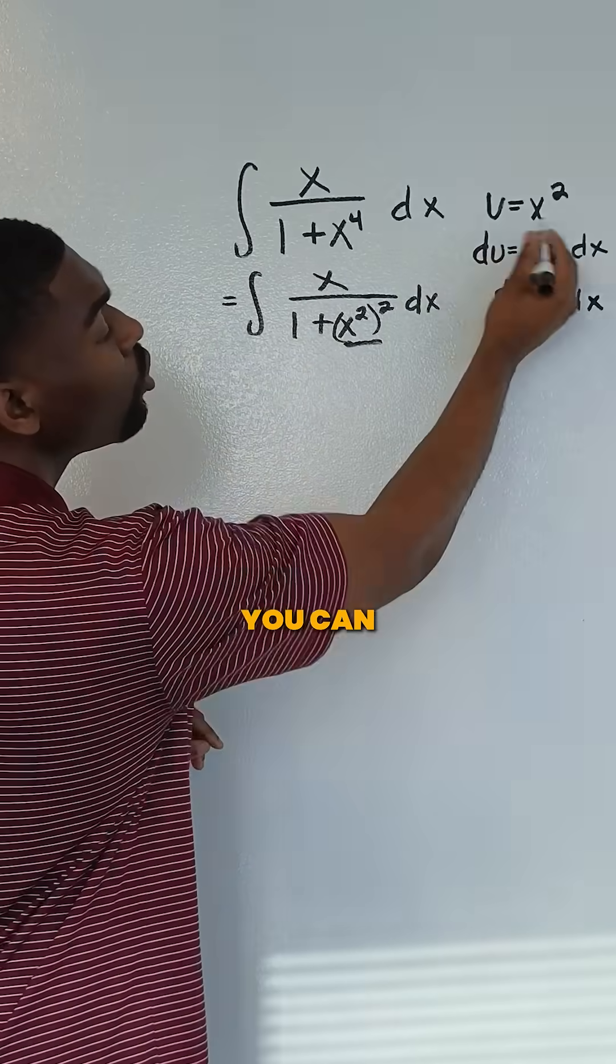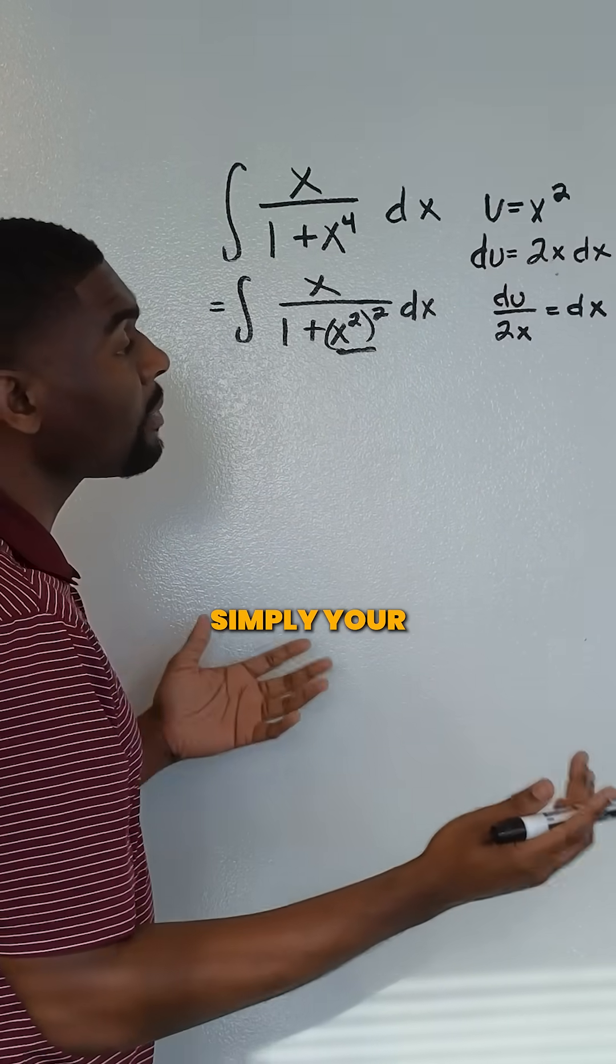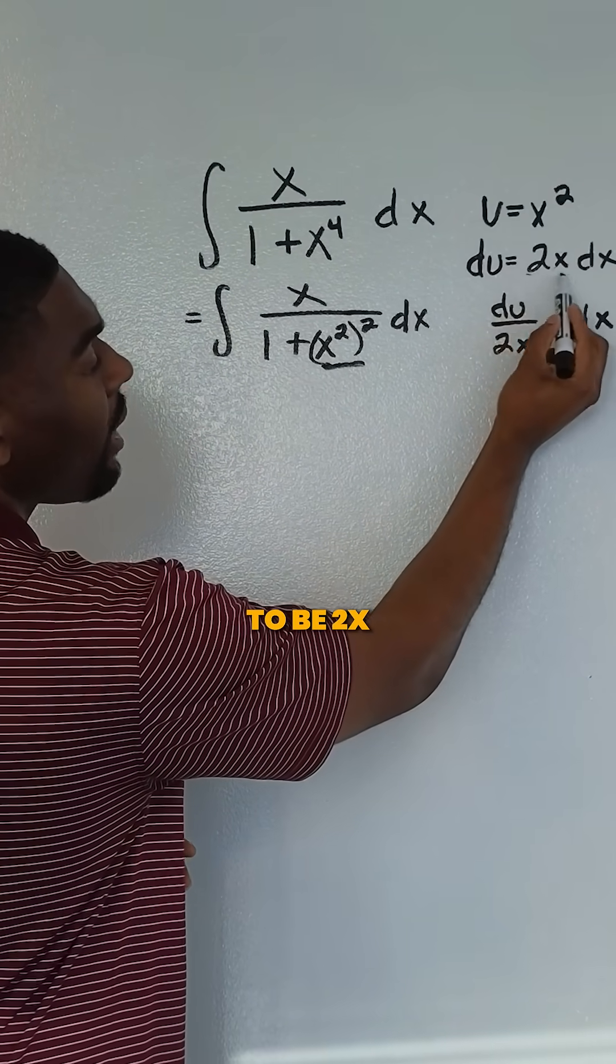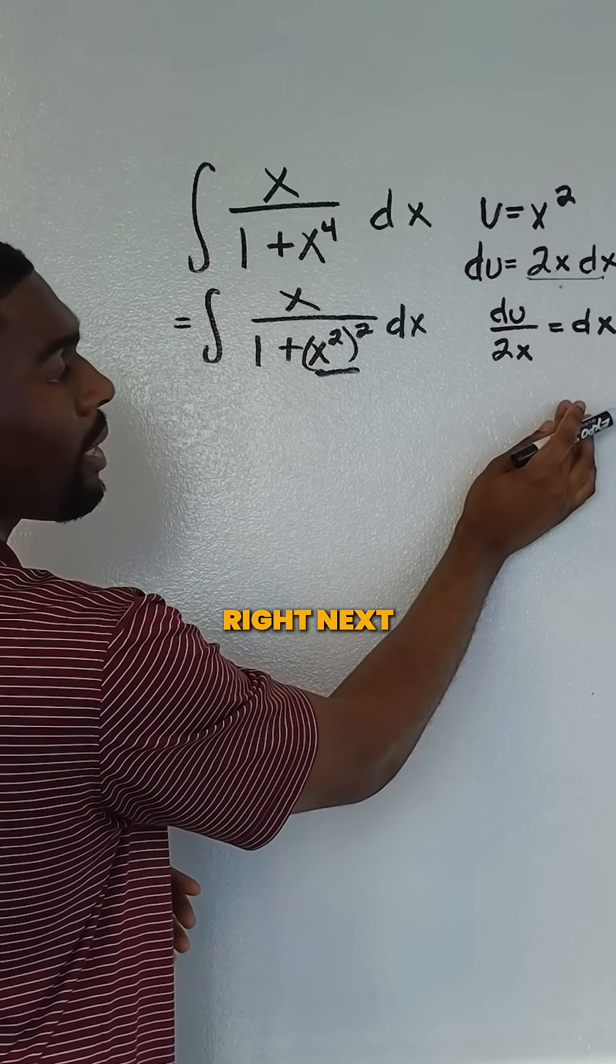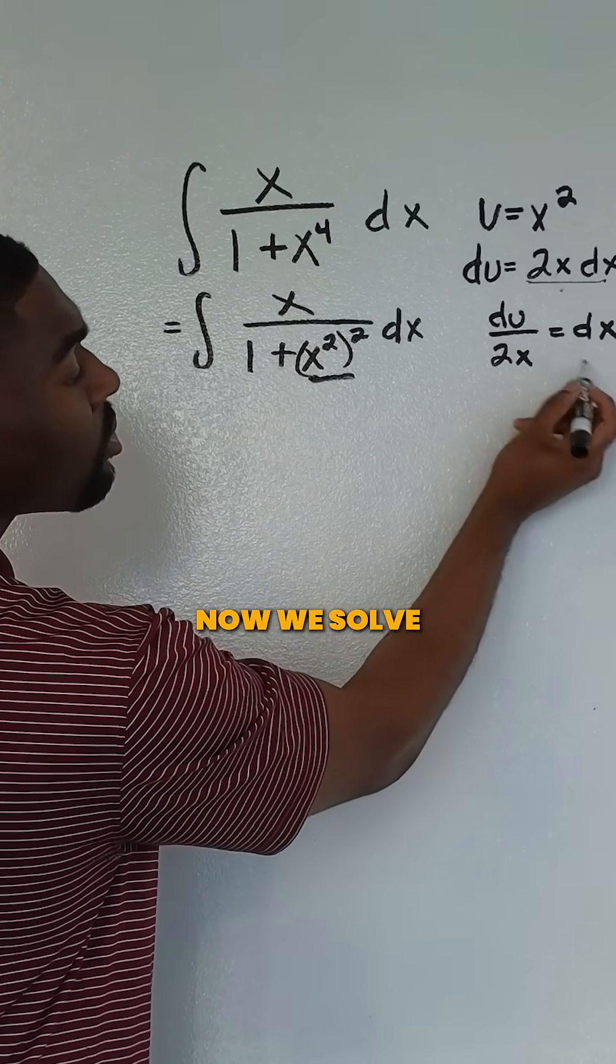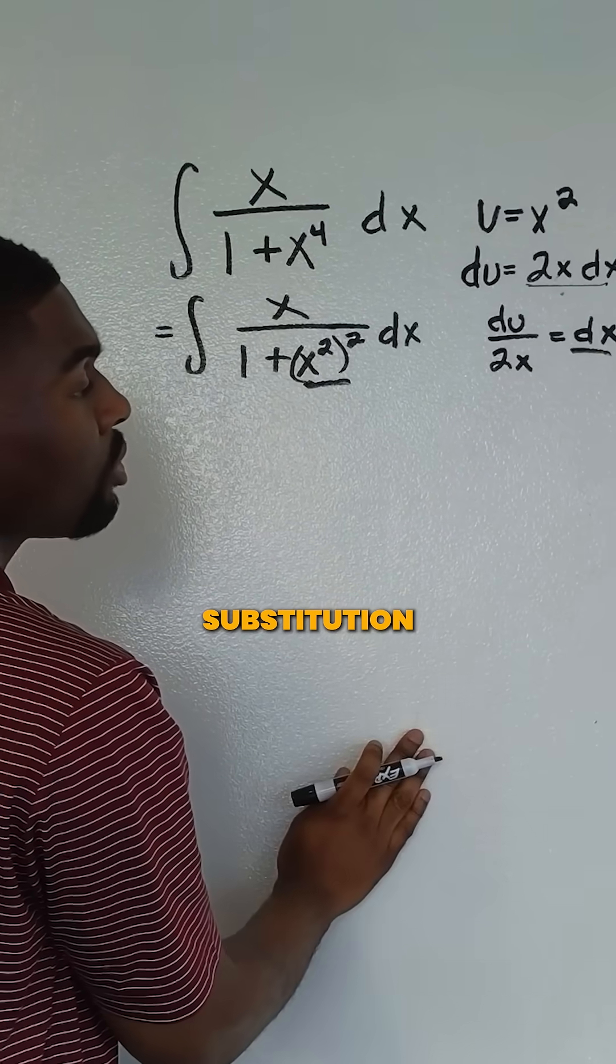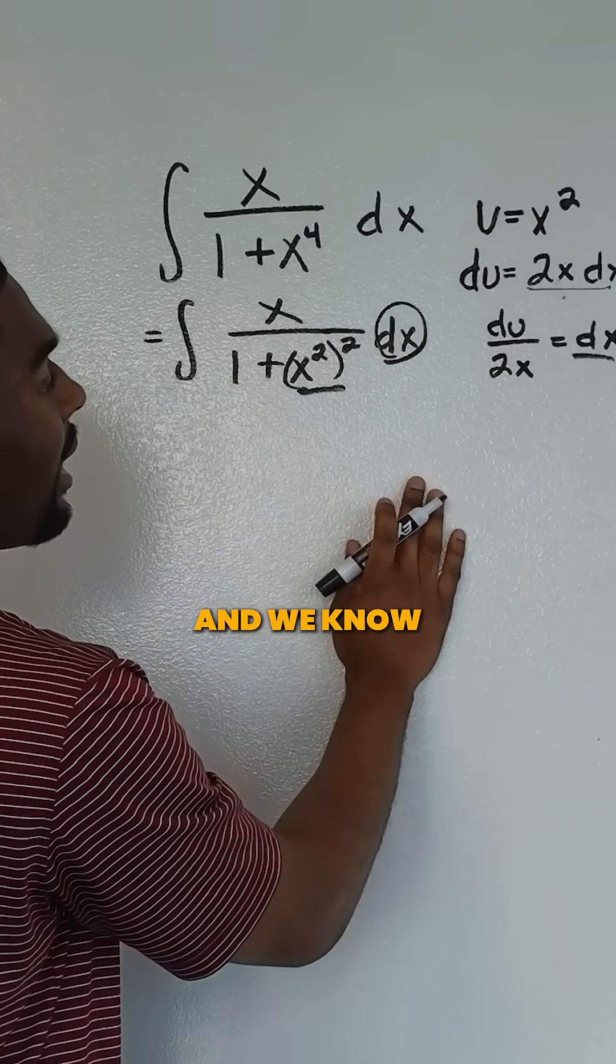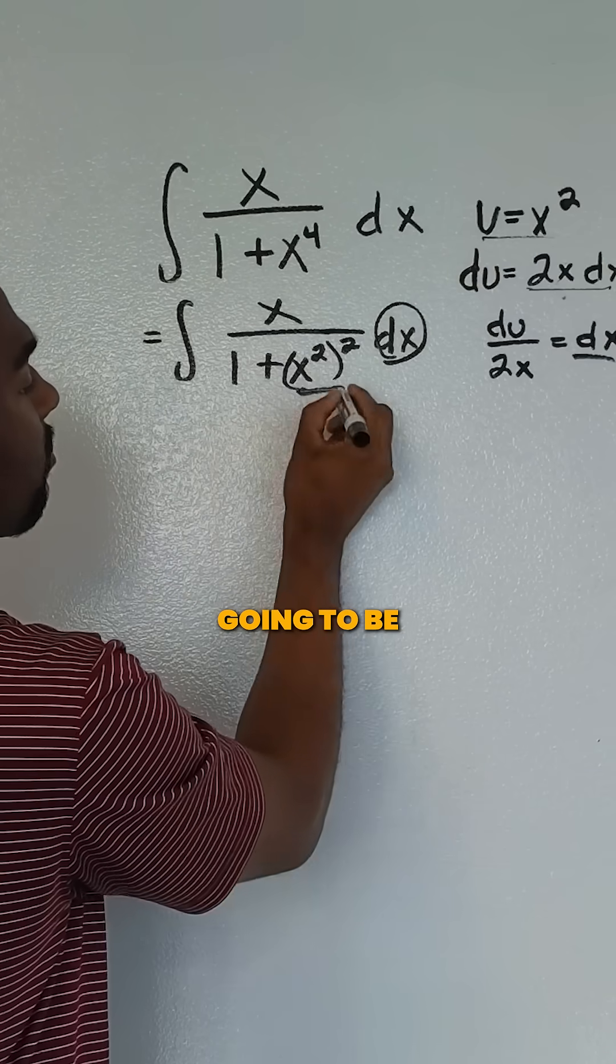Once you have selected your u, you can then find your du, which is simply your derivative of u. The derivative of x squared is going to be 2x. We always have our dx right next to it, and then now we solve for our dx for our substitution. So we get du over 2x, and that's what we're going to replace here. We know that our u is simply going to be x squared.